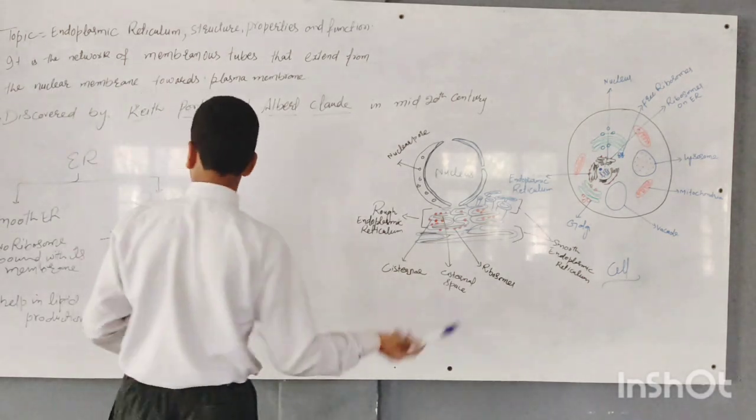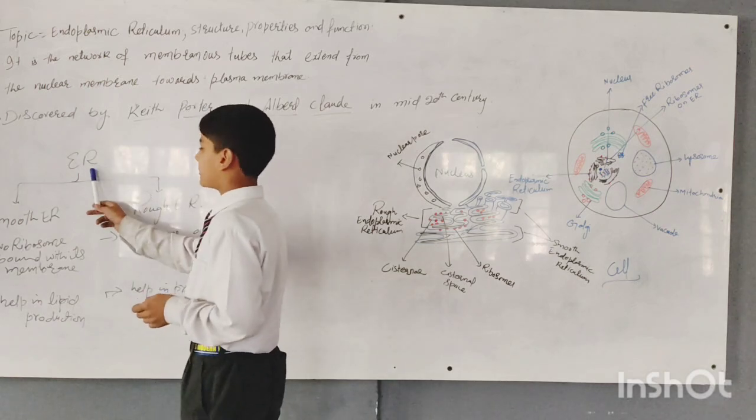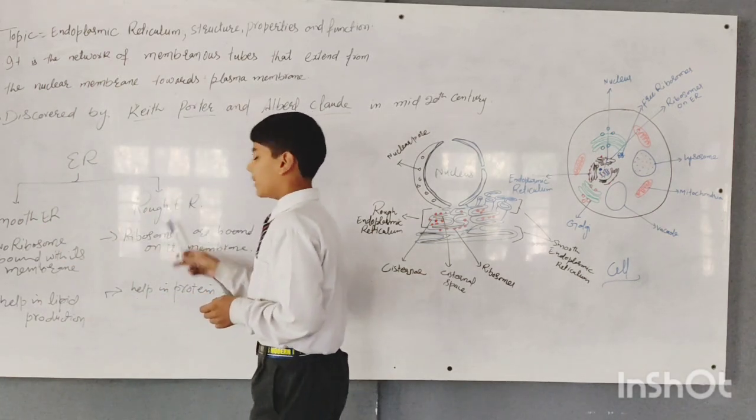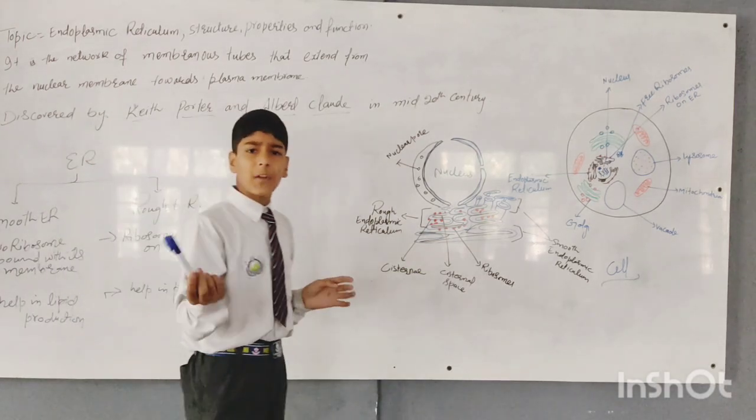Now I will tell you about its types. There are two types of endoplasmic reticulum: smooth endoplasmic reticulum and rough endoplasmic reticulum. First, I will tell you about the rough endoplasmic reticulum.